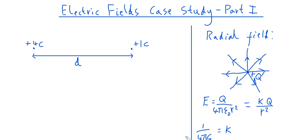Our strategy to work out the electric field due to the two positive charges is to calculate the electric field at various points, building up a picture of what the overall field looks like. A good place to start is the midpoint between the two charges — call it M. To work out the electric field at M, we work out the field due to the 4 coulomb charge at M, then the field due to the 1 coulomb charge at M, and combine them to get the resultant. This is just like combining individual forces to get a resultant force, since the electric field is the force on a unit positive charge. I'd like you to pause the video and have a go at this yourself.